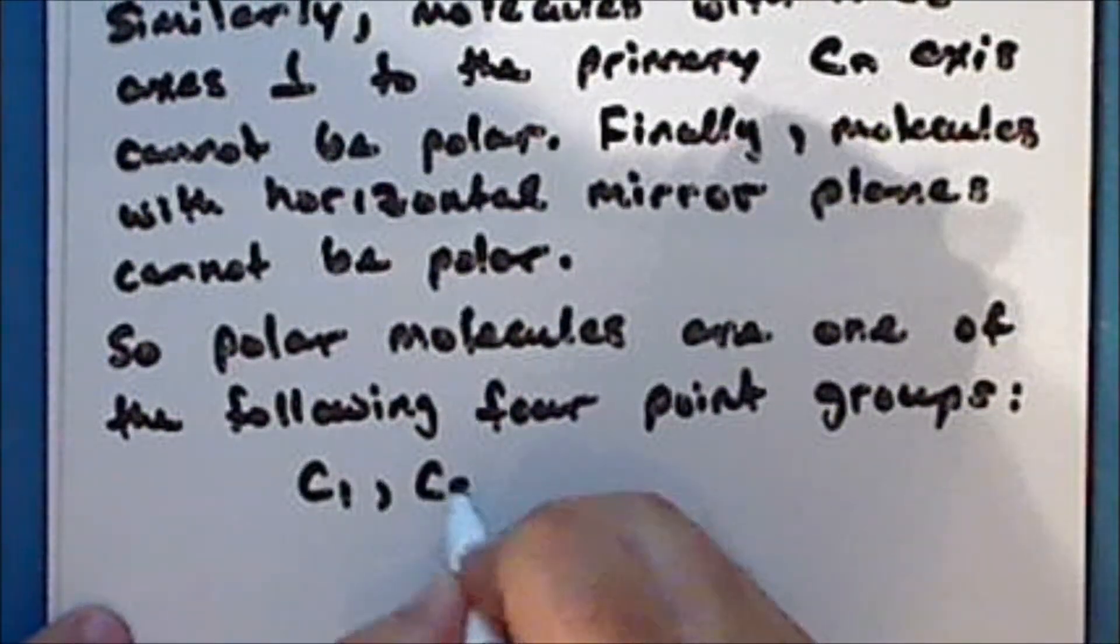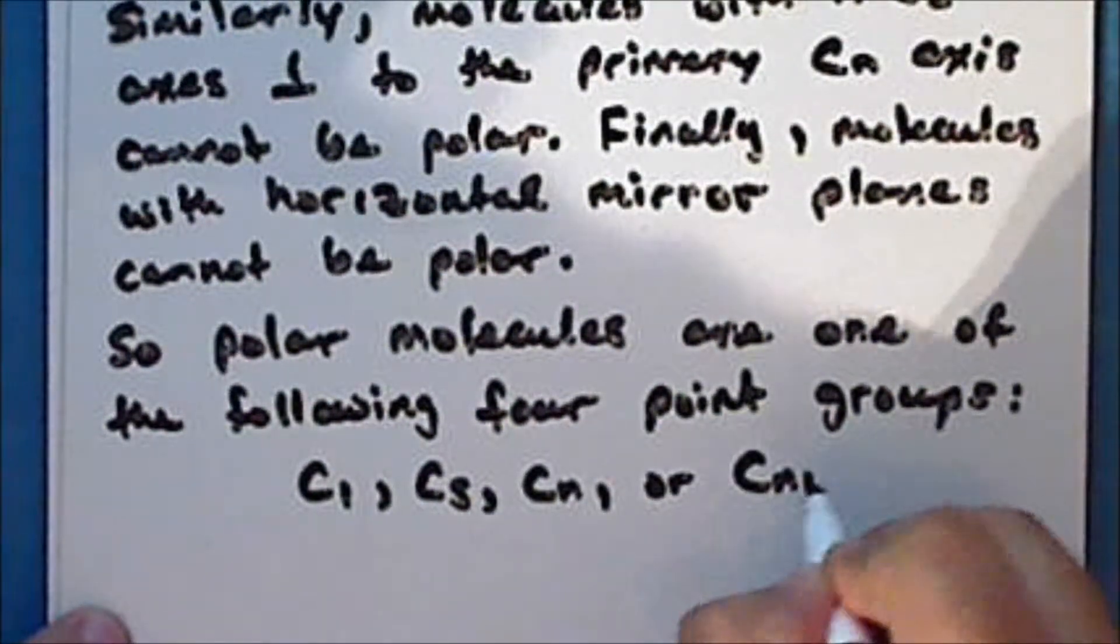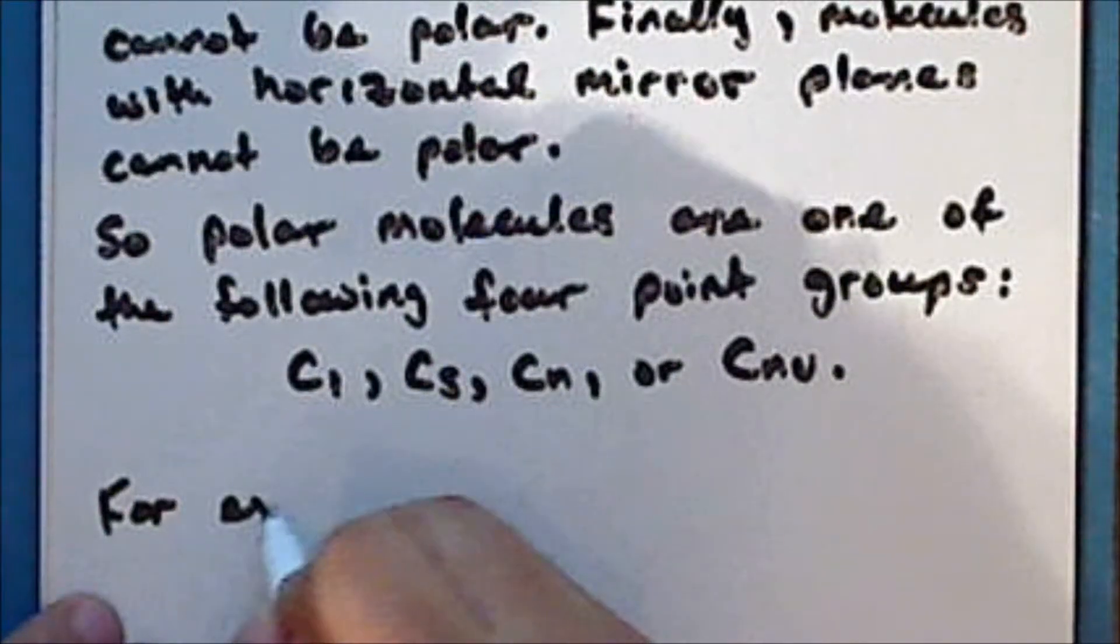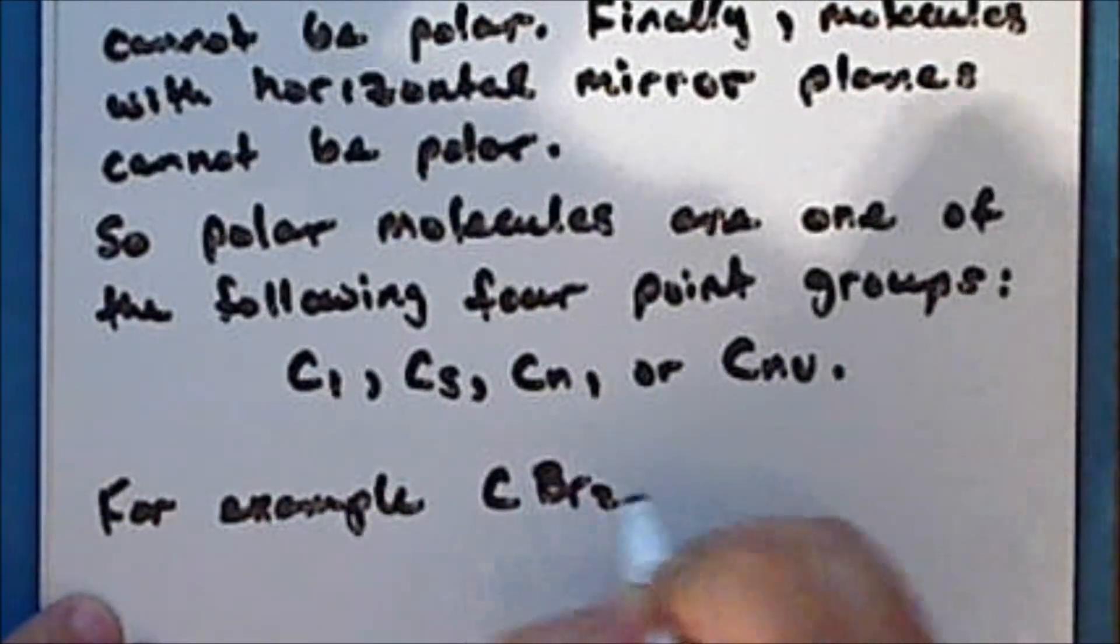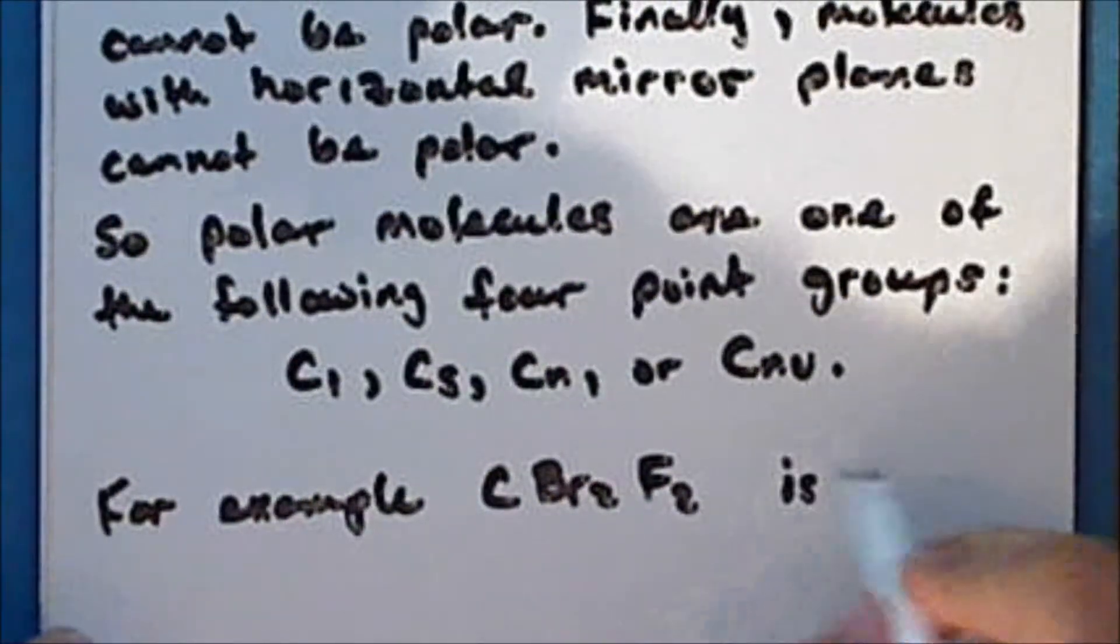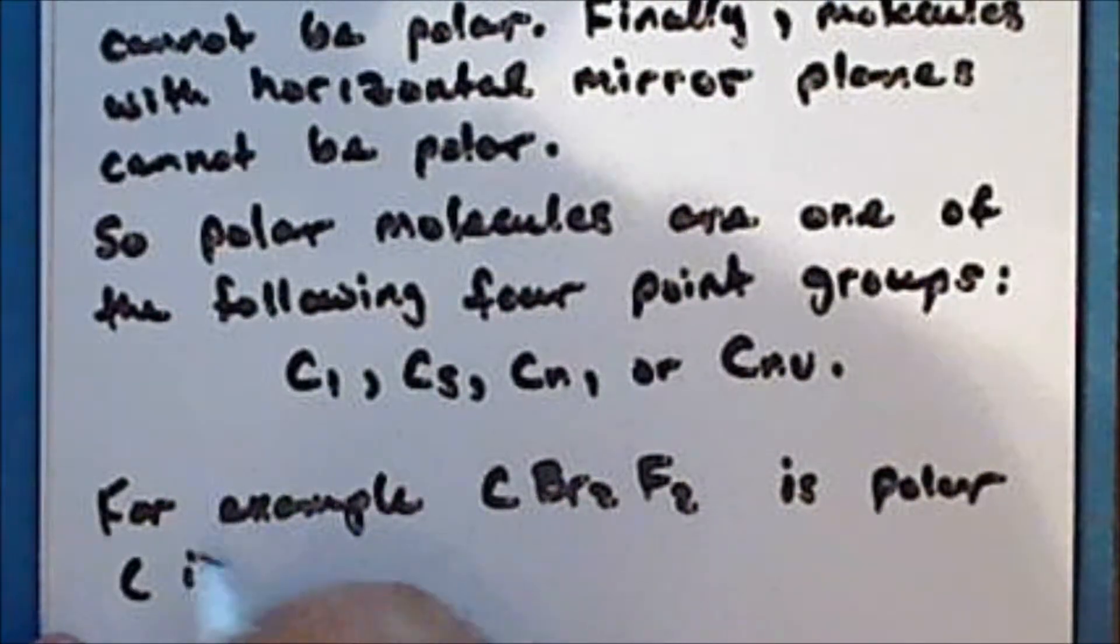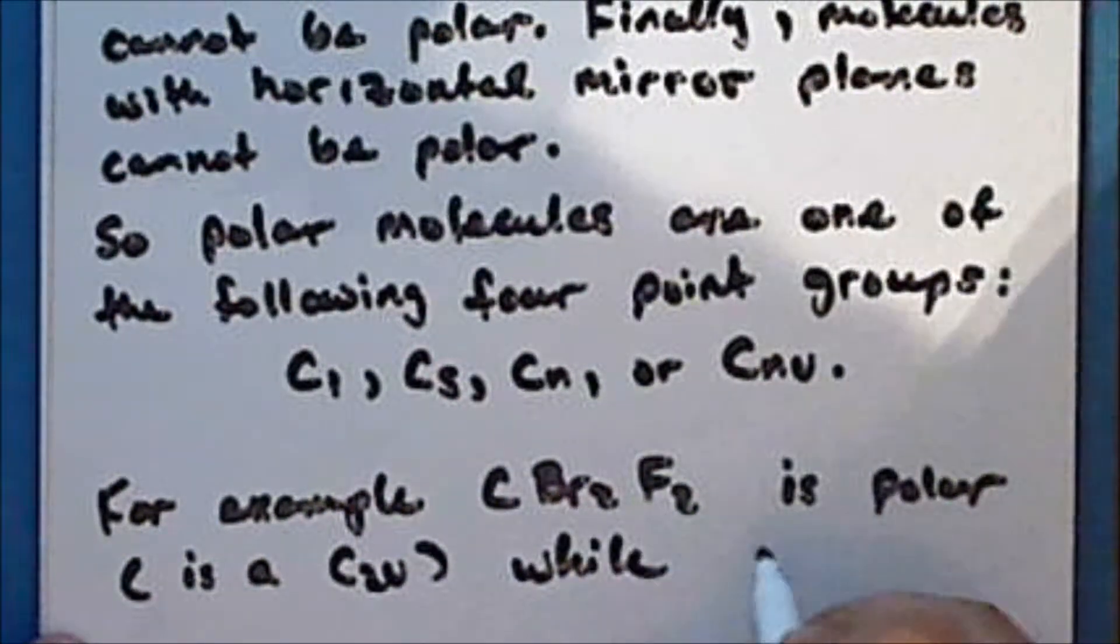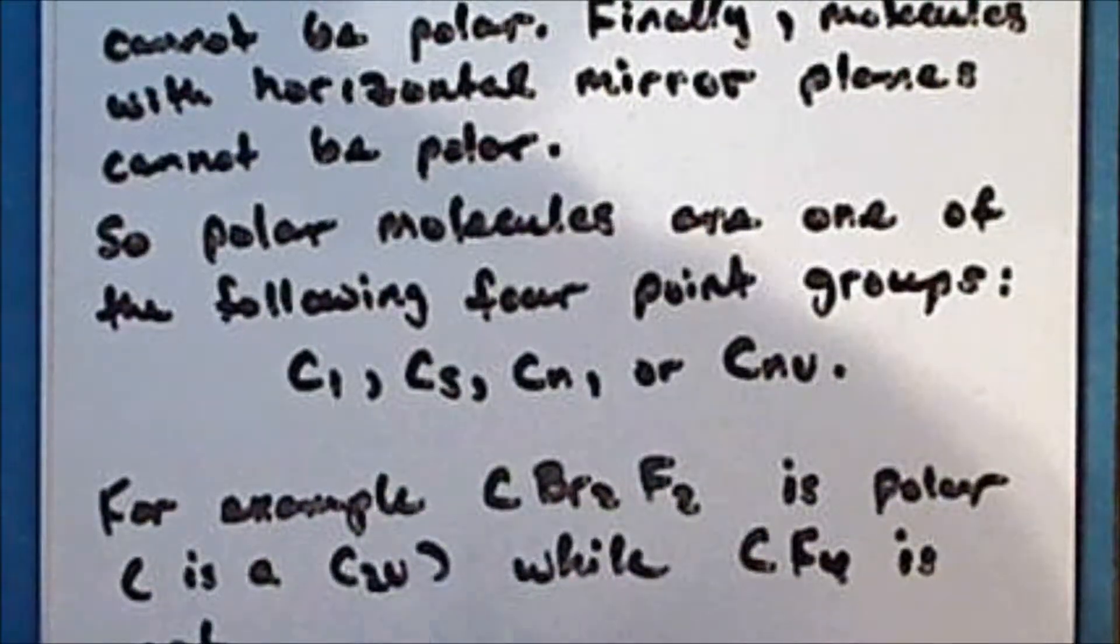And so polar molecules are one of the following four point groups. C1, Cs, Cn, or CnV. For example, the dibromo difluoromethane molecule is polar and recall is a C2V molecule while carbon tetrafluoride is not polar.